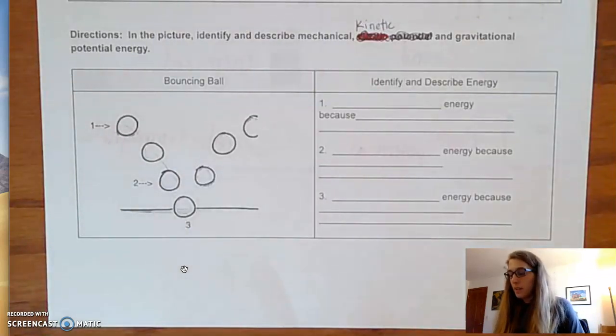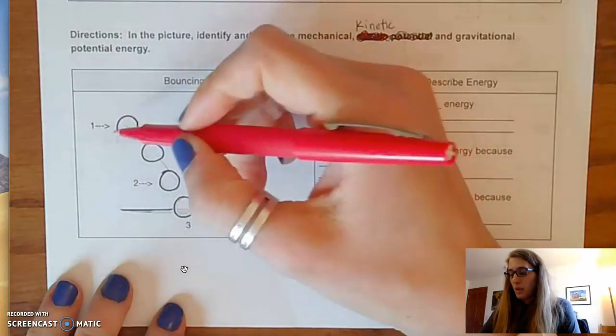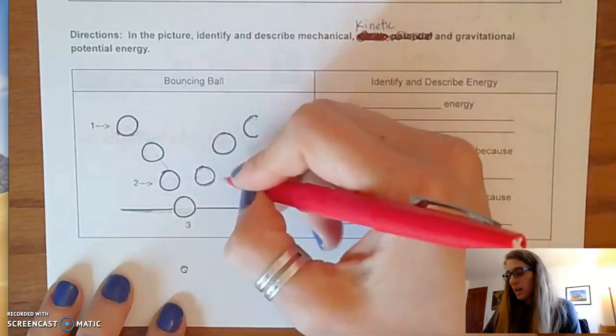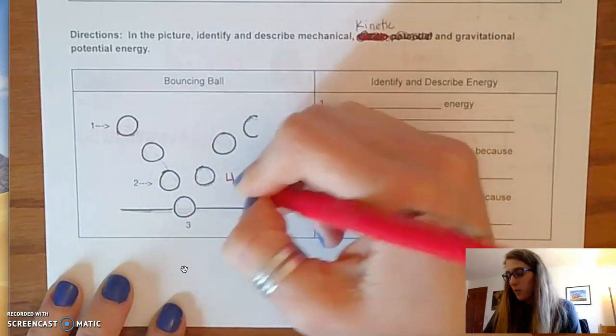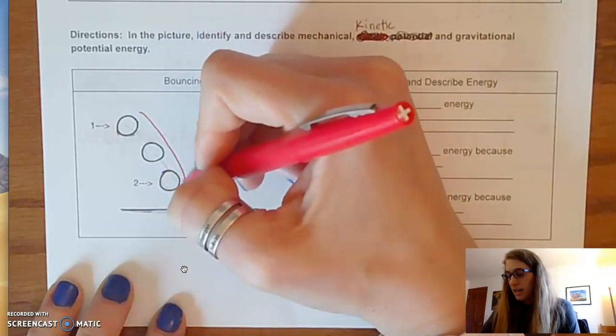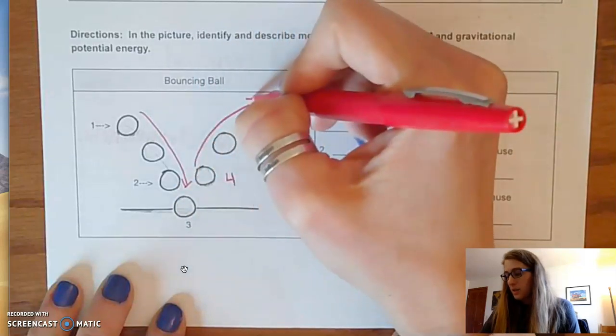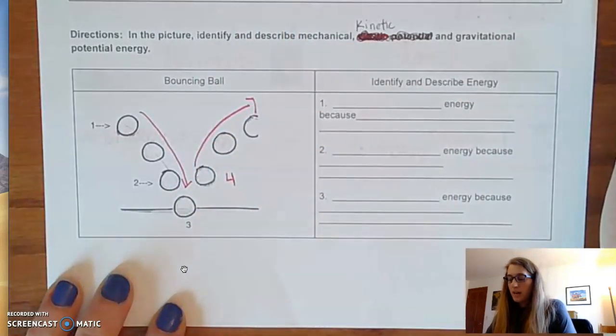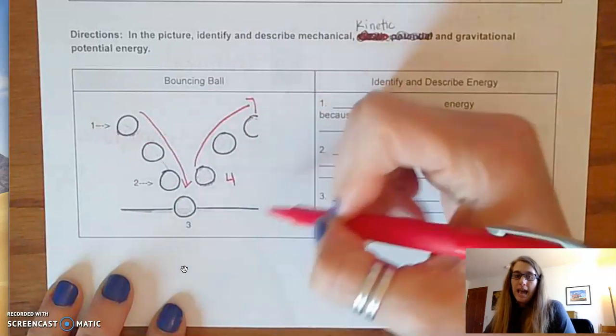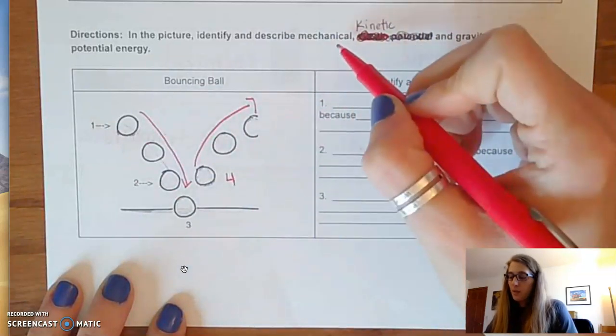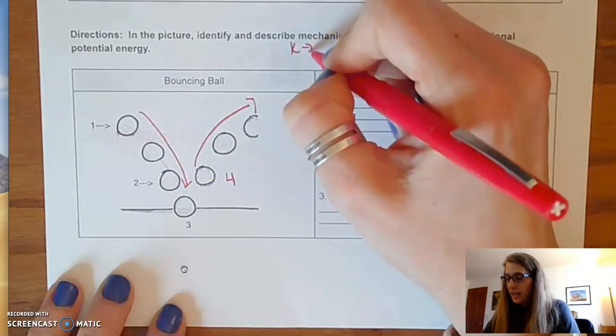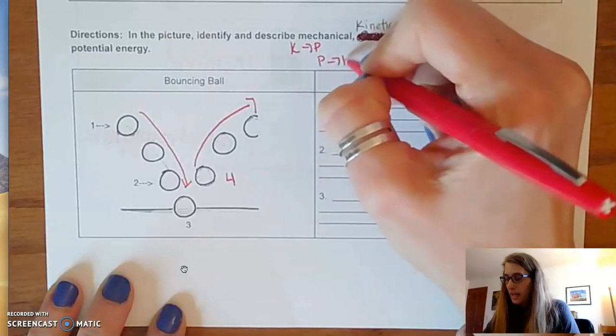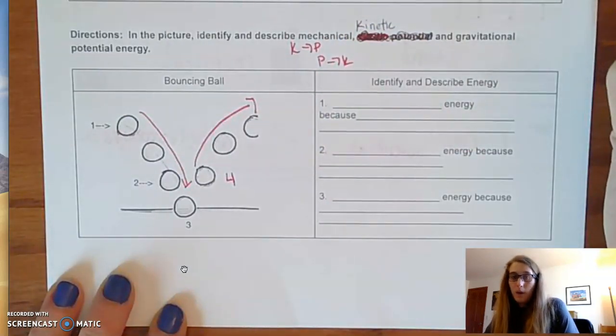So if we look at this bouncing ball, we have one, two, three. I'm also going to add a four. So this ball goes down, then this ball comes up. At each part, we have to identify which one it has, and we're going to get more specific with mechanical. Is it K to P or is it P to K, and our becauses are going to be important as well.